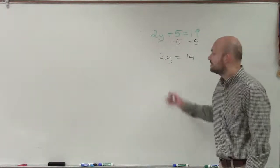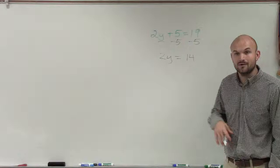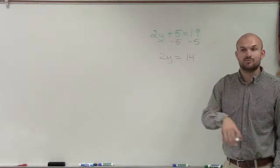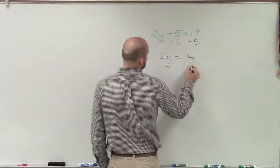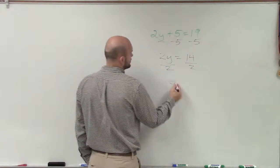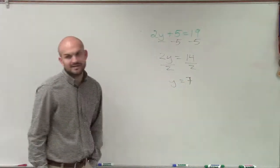Then, the next thing, Terrell, is now you can look at this number two and say, what's happening to the value of my y now? It's being multiplied, so to undo multiplication, you have to do division on both sides. So y equals a positive seven. And that's your answer.